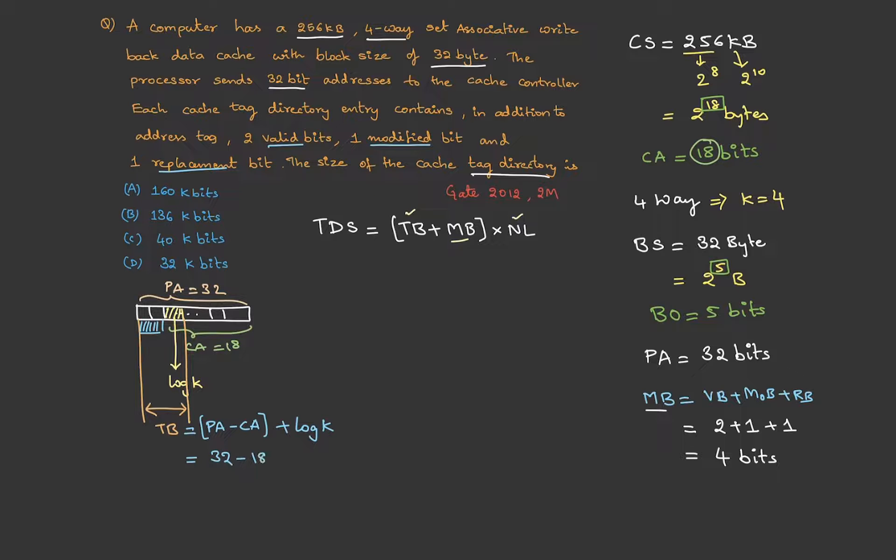So, when we calculate this, 32 minus 18 plus log 4. This is 14 plus 2, that is equal to 16 bits. Alright, we got the tag bits.